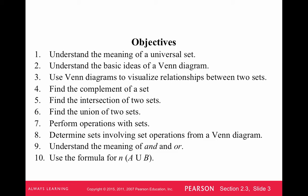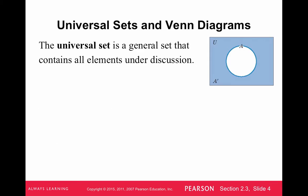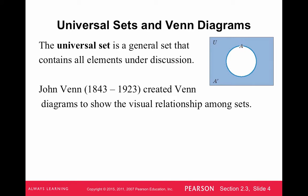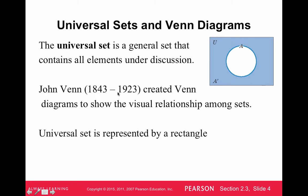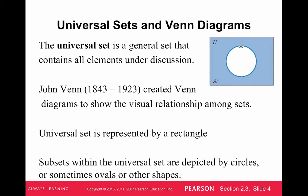We have a lot of things to cover here, so let's talk about Venn diagrams first. The universal set is a general set that contains all elements under discussion, and then we make a Venn diagram inside that universal set. John Venn created Venn diagrams to show the visual relationship among sets. The universal set is represented by a rectangle, and subsets within the universal set are depicted by circles, or sometimes ovals or other shapes.